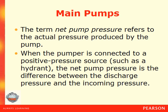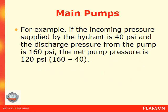The term net pump pressure refers to the actual pressure produced by the pump. When the pumper is connected to a positive pressure source, the net pump pressure is the difference between the discharge pressure and the incoming pressure. For example, if the incoming pressure supplied by the hydrant is 40 psi and the discharge pressure from the pump is 160 psi, the net pump pressure is 120 psi.